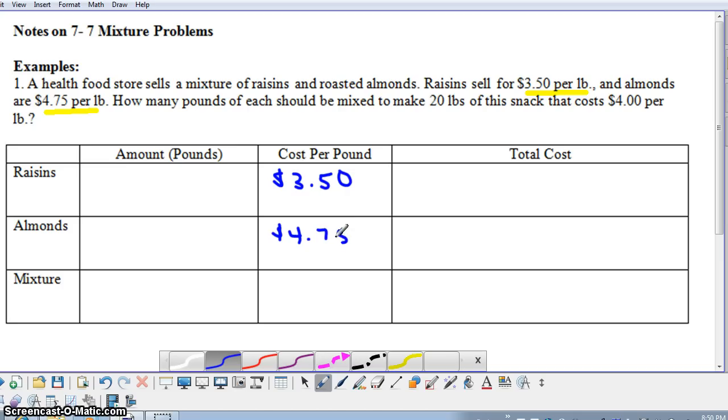We're going to make a mixture that we're going to sell for $4 a pound. Notice that the price of the mixture is partway between the price for the raisins and the price for the almonds. Obviously if our mixture was all almonds, our price would be $4.75 per pound. If our mixture was just consisting of raisins, our mixture would be $3.50 per pound, but since we're using some of each, our price is in between the two prices of the individual items.